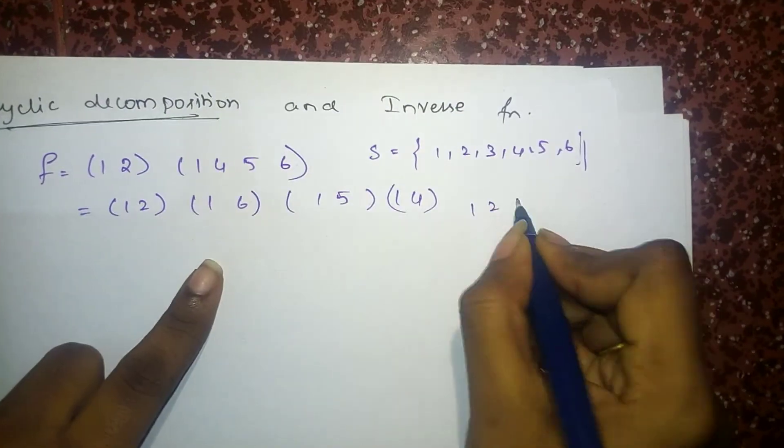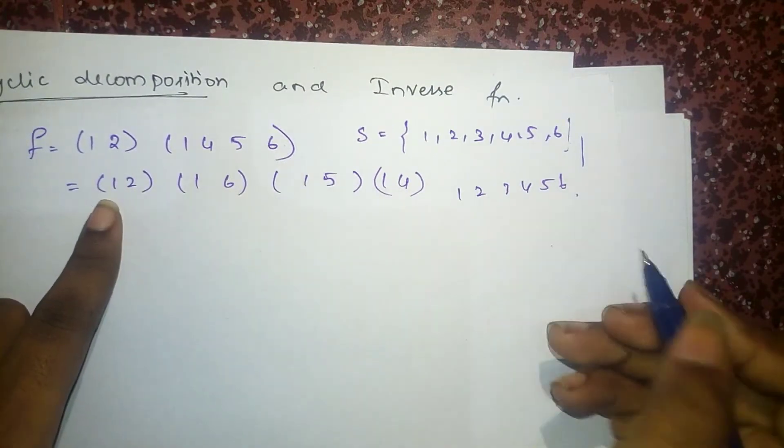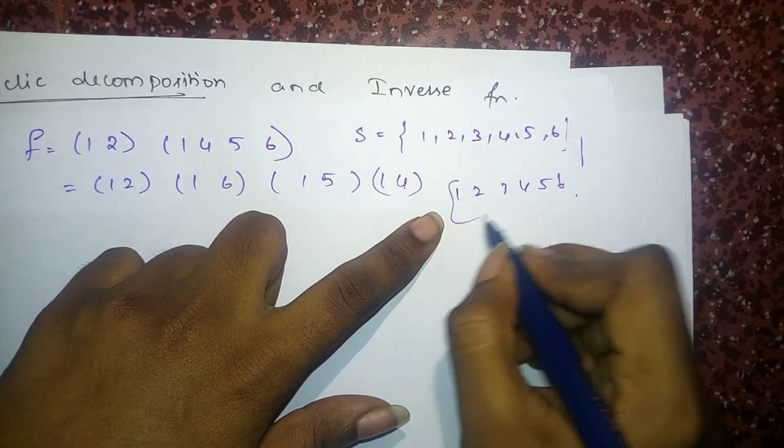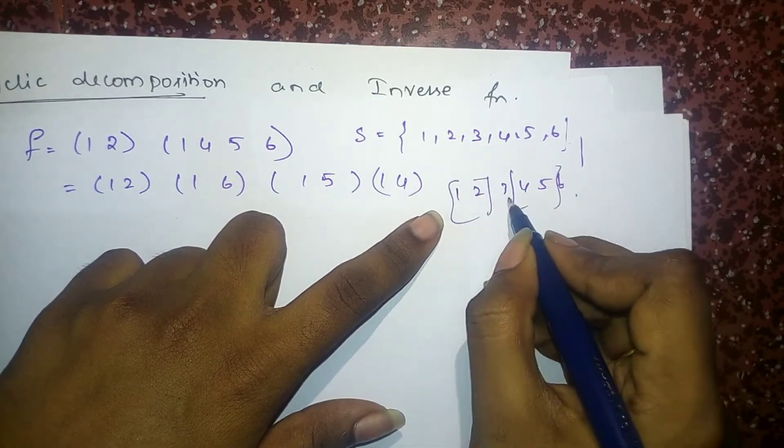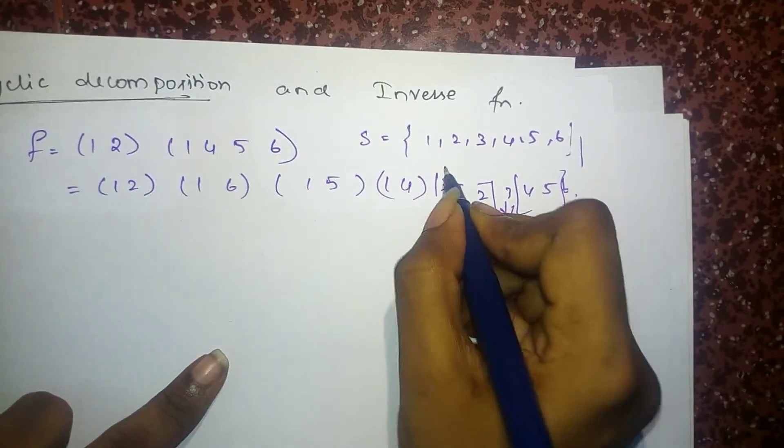Which means, 1, 2, 3, 4, 5, 6. If we write this mapping, everything will be mapped to some other element except 3. 3 will be mapped to itself. So I can write this 3 separately.